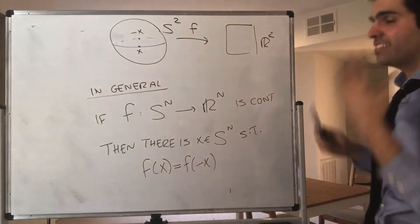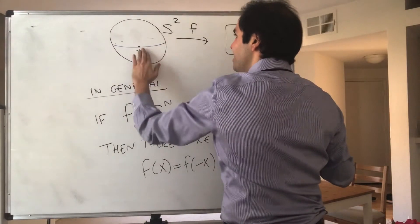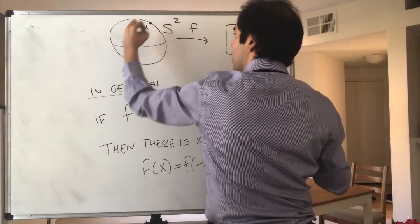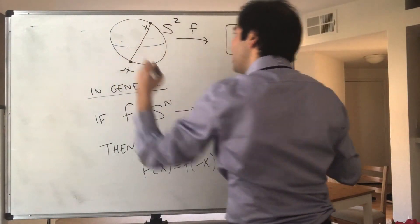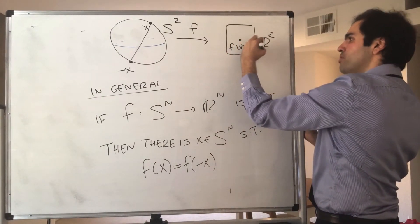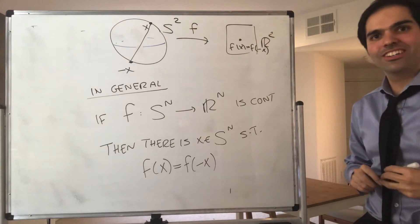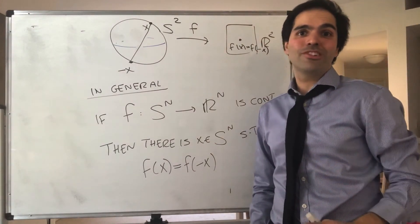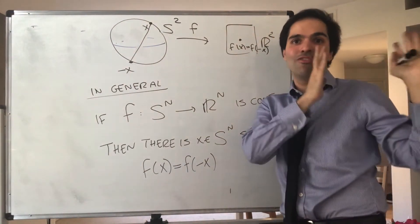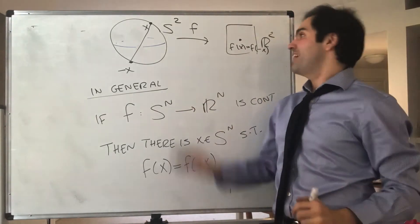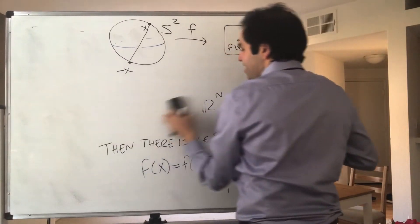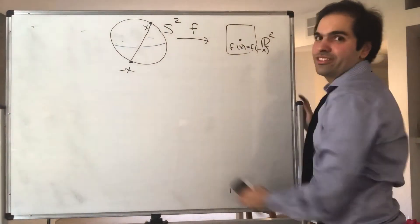Then what this is saying is, there are two antipodal points on Earth that not only have the same temperature, because temperature would be for a single-valued function, but not only the same temperature but also the same pressure. Because you can just take the function which consists of temperature and pressure, and that's a function to R², because we have two pieces of information.